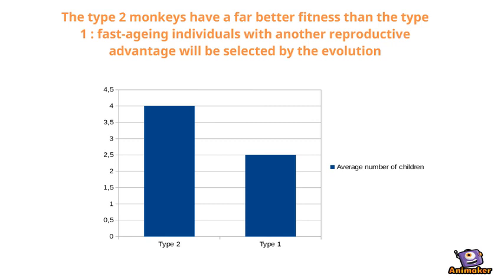So, we have seen that aging could have been selected, not because it's helpful for the species, but simply because it doesn't impact very much the individual's fitness.